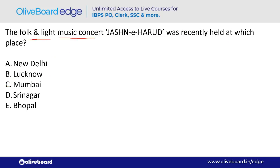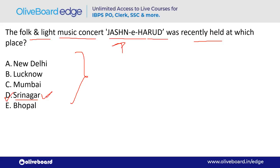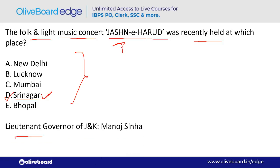The folk and light music concert 'Jashn-e-Harud' was recently held at which place? It was held in Srinagar — option D. Srinagar is the capital of Jammu & Kashmir; the current Lieutenant Governor is Manoj Sinha.